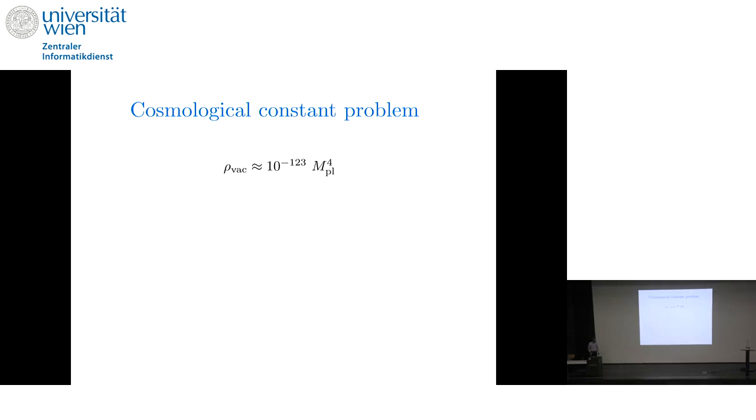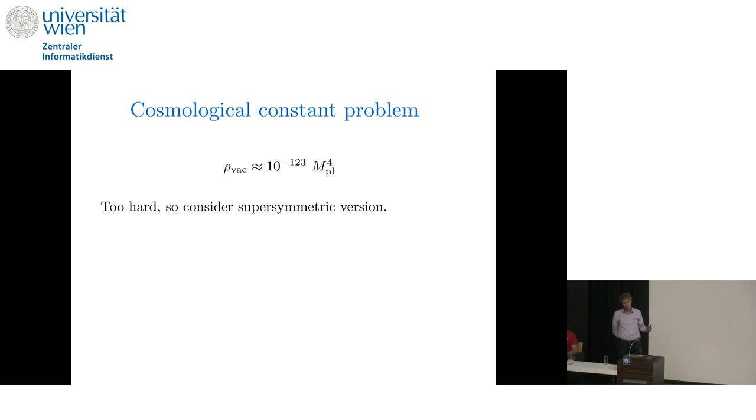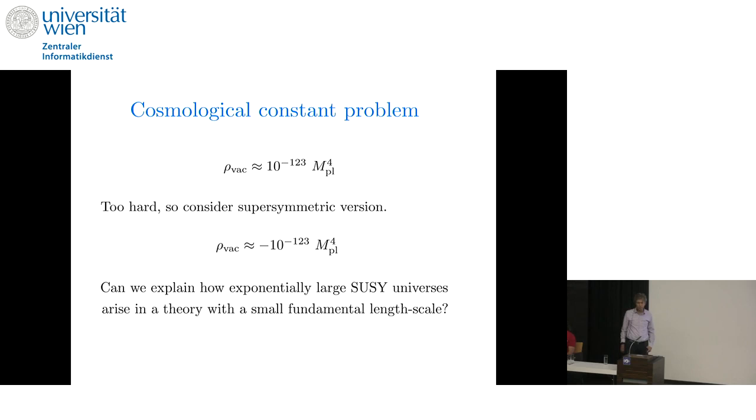Thanks to the organizers for giving me the opportunity to speak here. This talk is about the cosmological constant problem, which stems from the fact that the observed vacuum energy is extremely small in natural units. This problem is just too hard. So let's try and consider a supersymmetric version. Why don't we consider a vacuum energy that's extremely small in magnitude but negative, and try to ask if we can explain how an exponentially large supersymmetric universe could arise in a theory with a small fundamental length scale.